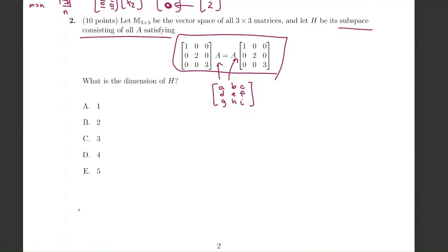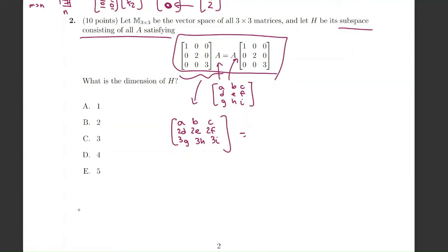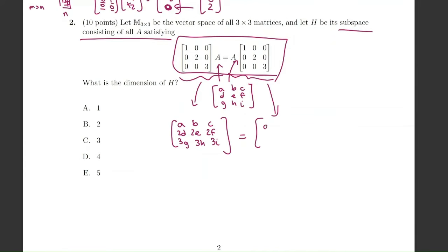When we do the multiplication, on the right-hand side we get a, b, c, 2d, 2e, 2f, 3g, 3h, 3i. On the left-hand side we get a, 2b, 3c, d, 2e, 3f, g, 2h, 3i. These need to be equal.